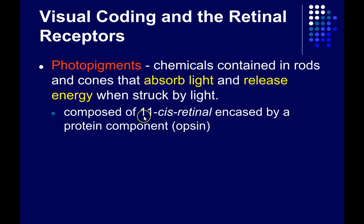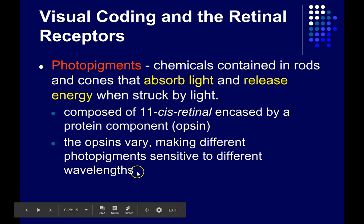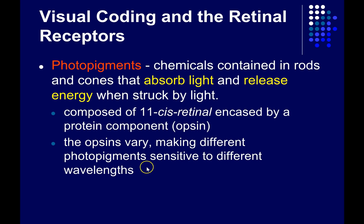The photopigments are composed of 11-cis-retinol, a light-sensitive molecule that's encased by a protein component called an opsin. These protein components, these opsins, vary from one another. And as a result, different photopigments are sensitive to different wavelengths of light. And as we'll see, this is at the heart of our ability to discriminate different colors.